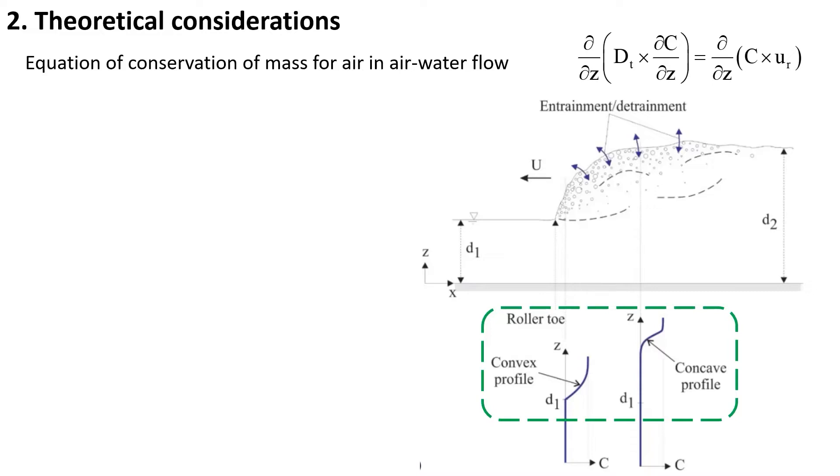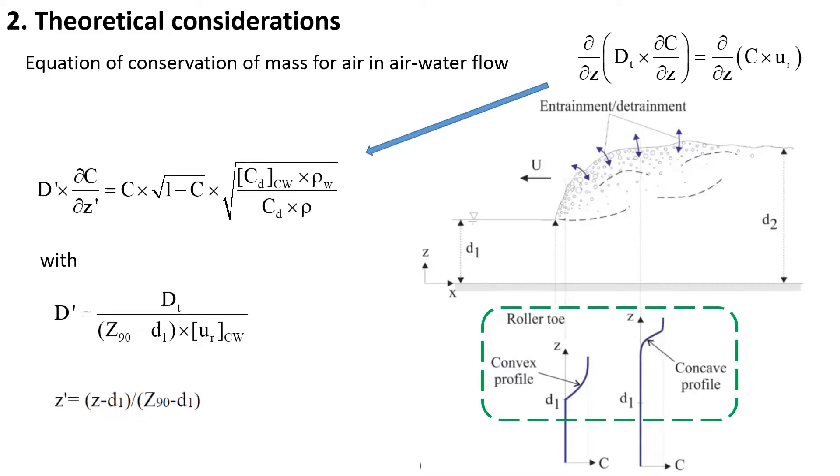Let us apply the equation of conservation of mass for air in this complicated air-water flow. After transformation, we obtain this differential equation in dimensionless form, in which C, the key variable, is the void fraction and D' is a turbulent air-water diffusivity.